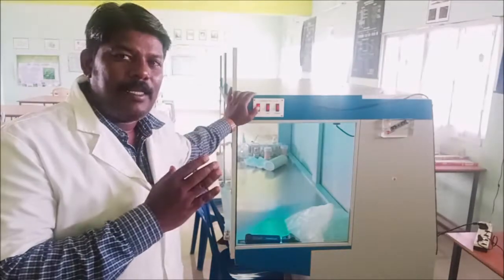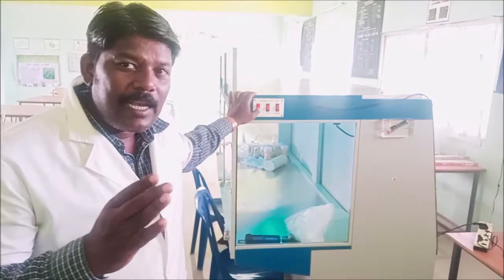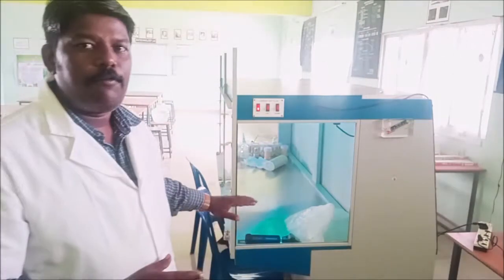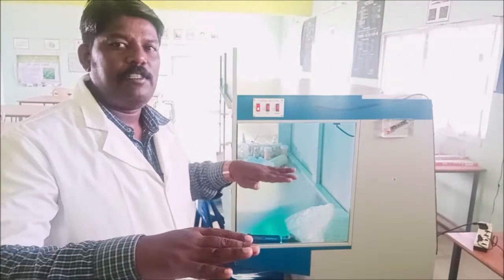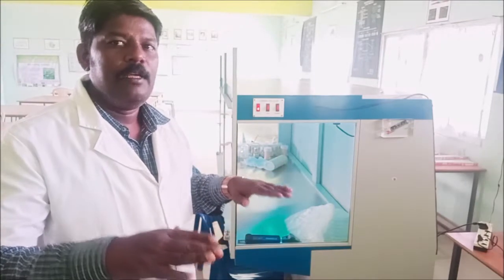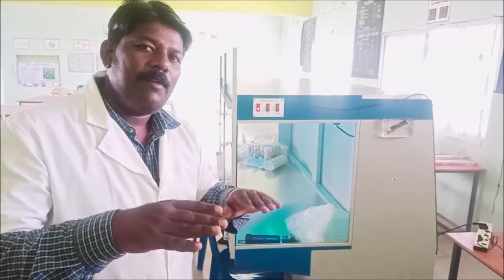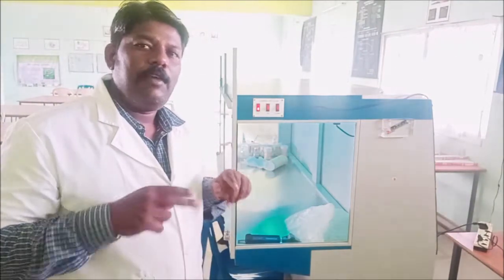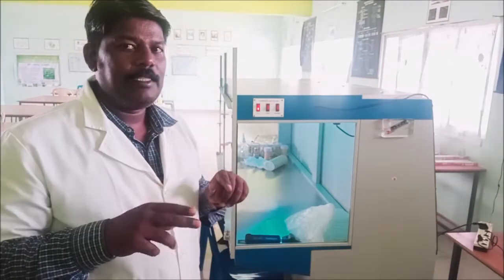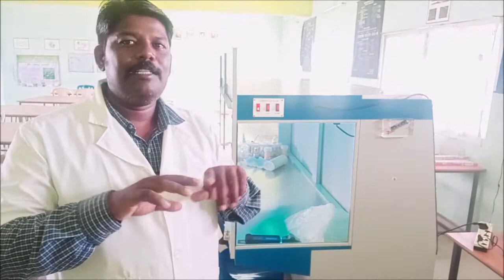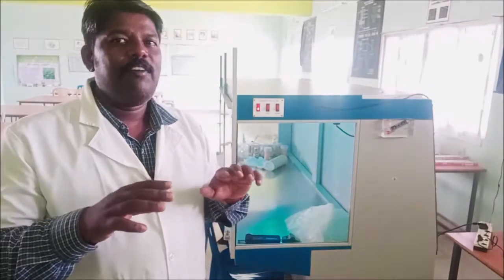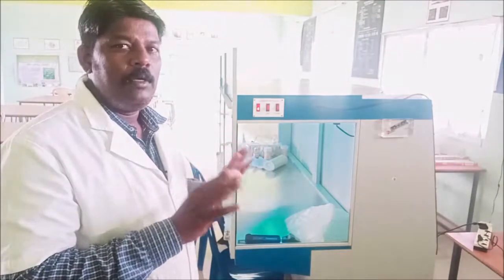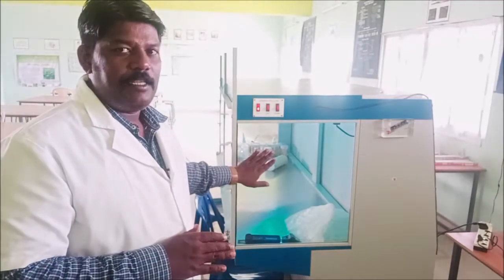Ultraviolet light is one of the physical types of sterilization — it is a physical method of sterilization. UV ultraviolet rays cause breakdown and dismantling of nucleic acid, killing fungal and bacterial organisms. You need to switch on the UV light for two to three minutes before working.